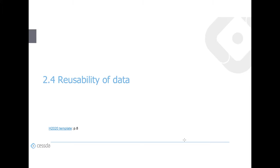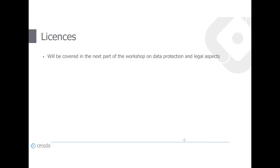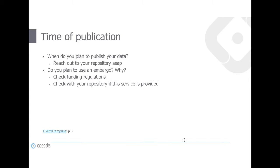The fourth aspect is the reusability of data. Licenses are a very important aspect here, and will be covered in the next part of the workshop by Lisa along with data protection and legal aspects. What is also important about reusability is the time of publication. Our recommendation is to reach out to publish research data as early as possible to keep your schedule and timeline. This is also the place to lay out whether you plan to use an embargo and why.